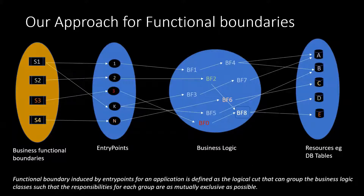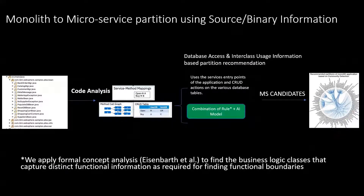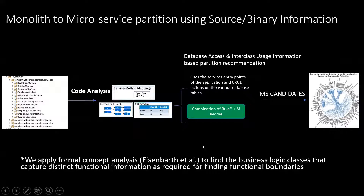The key difference between our approach and the transaction context based approach is that we can infer the number of functional boundaries — that does not need to be given as input to us. In this slide we show how our approach works from the binary or the source code all the way to identifying microservice candidates. The input to our approach is an EAR or a WAR file, or it could be a Git repo, which is then passed through a variety of static analysis techniques to arrive at the service entry mappings, which is basically the entry point.